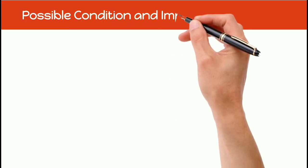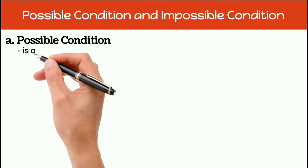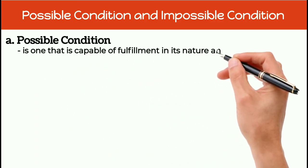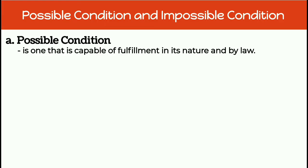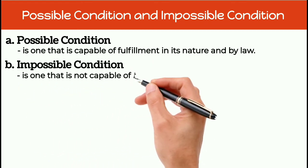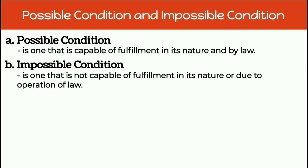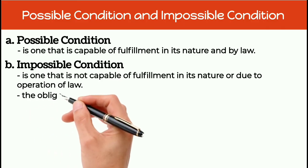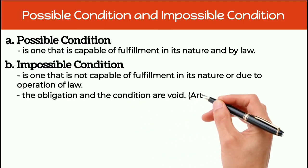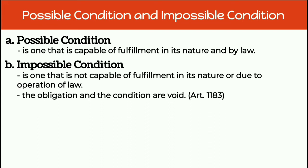Next, possible condition and impossible condition. Possible condition is one that is capable of fulfillment in its nature and by law — the condition is possible if it can be done and at the same time it is legal. Impossible condition is one that is not capable of fulfillment in its nature or due to operation of law — it is impossible if it cannot be done or if it is illegal. In this case, the obligation and the condition are void — this is Article 1183 of the New Civil Code of the Philippines. If the condition is impossible, both the obligation and the condition are not valid.